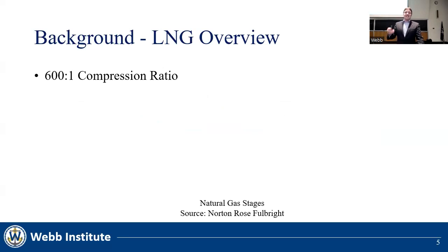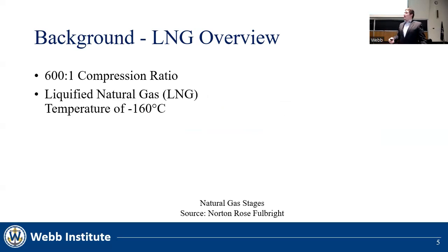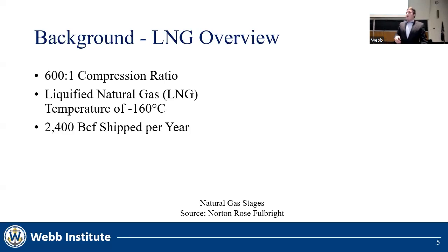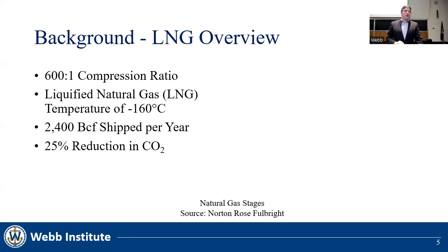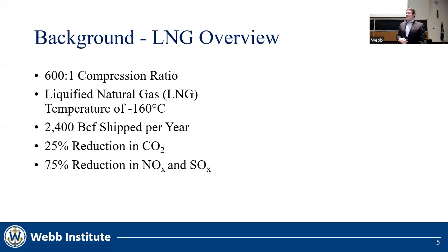LNG compresses at a ratio of 600 to 1, which means it is much more efficient to ship the liquefied version rather than the gas version. It is a cryogenic liquid that stays at a temperature of negative 160 degrees Celsius. Over 2,400 billion cubic feet of LNG are shipped per year. When burned, it has a 25% reduction in CO2 and a 75% reduction in NOx and SOx.